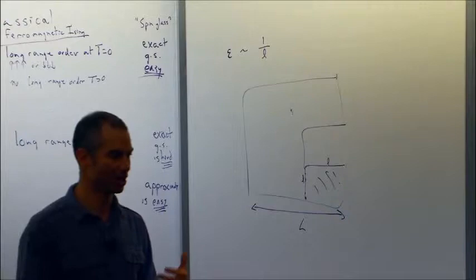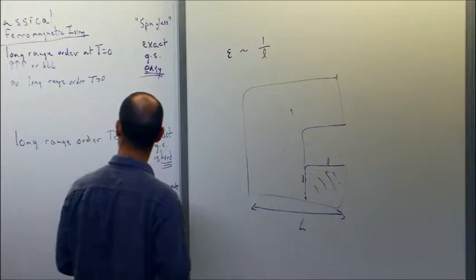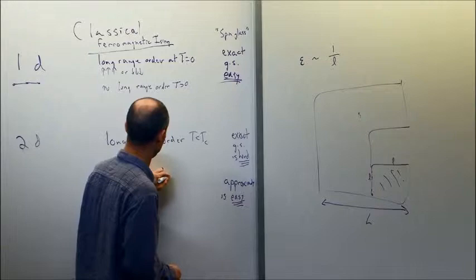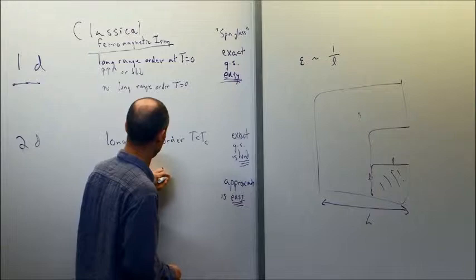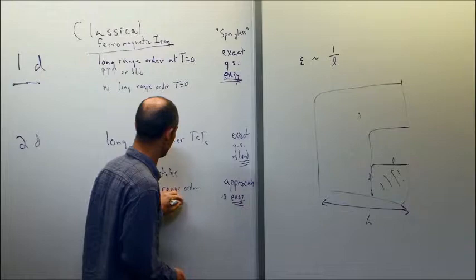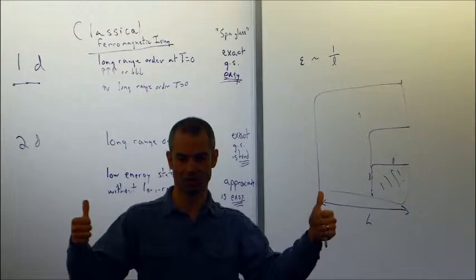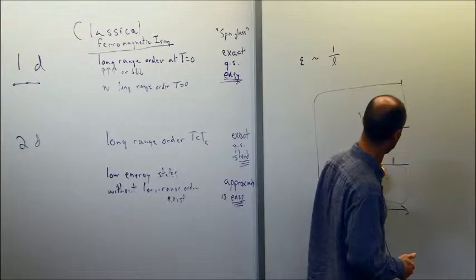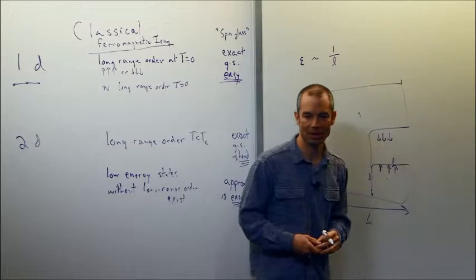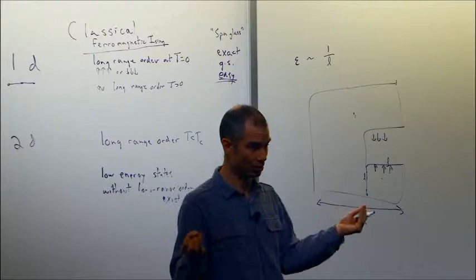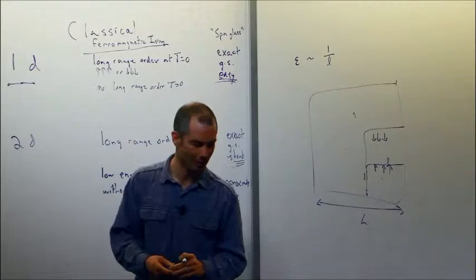So it's actually easy to approximate the ground state if your notion of approximation is approximation to a constant factor, proportional to the number of sites. Similarly, for the ferromagnetic Ising model, low energy states without long-range order exist. I can write down a state with relatively low energy where if you look at the expectation value of two randomly chosen spins, it's quite close to a half — equally likely to point the same way as opposite ways. You just take all the spins in one patch and point them up and all the spins in another patch and point them down. The correlation between two far-away spins is small, so you have no long-range correlations, yet the state has low energy — the same 1 over L energy.